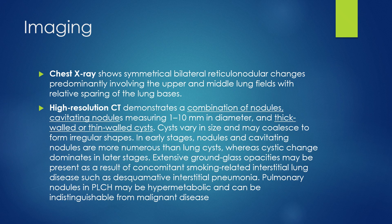Radiologically, PLCH may show symmetrical bilateral reticulonodular changes on chest X-ray with involvement of upper and middle lung fields. On HRCT, it shows a combination of nodules, cavitating nodules measuring 1 to 10 millimeters, and cysts of variable sizes and thickness. Cysts may vary in size and may coalesce to form irregular shapes.